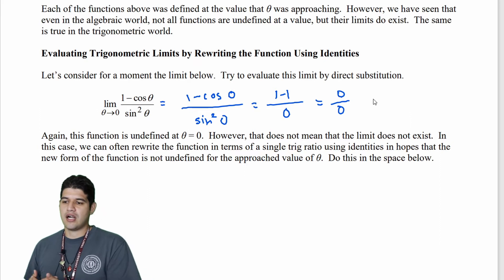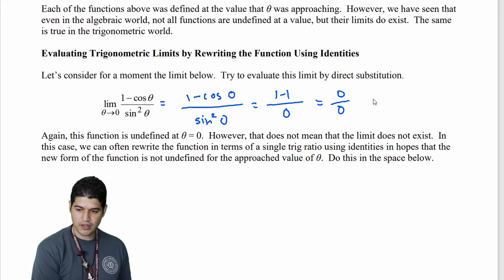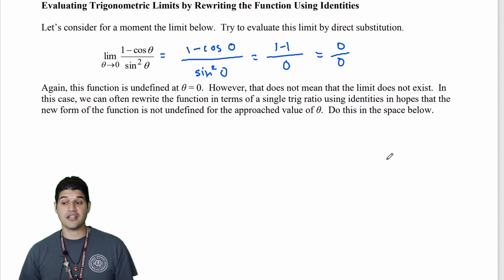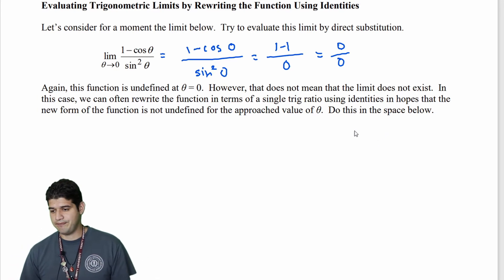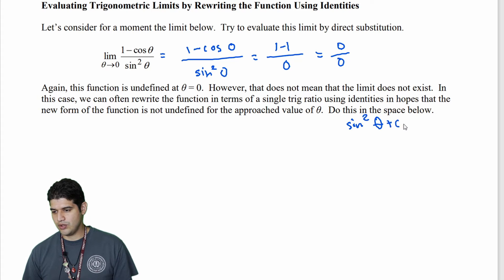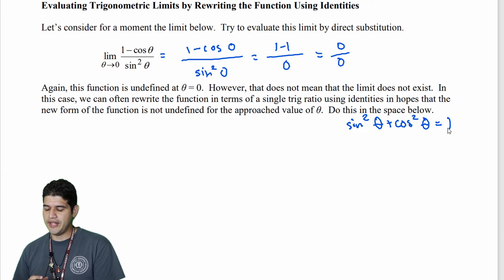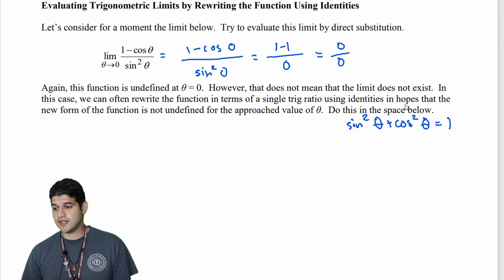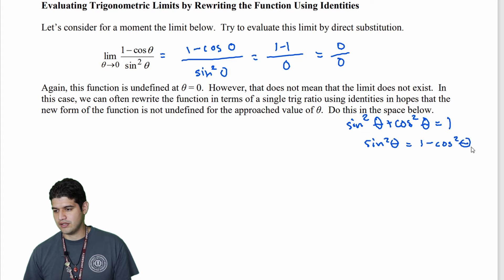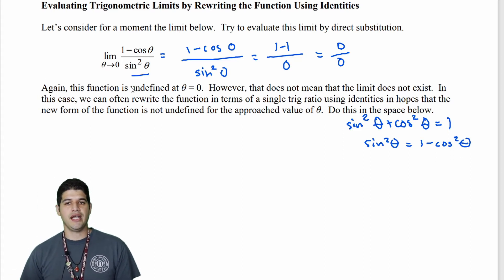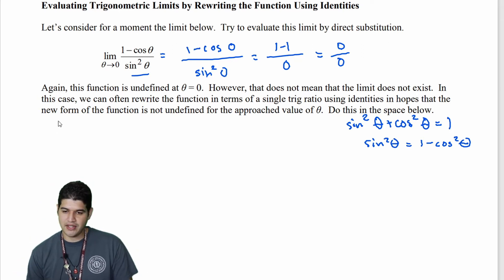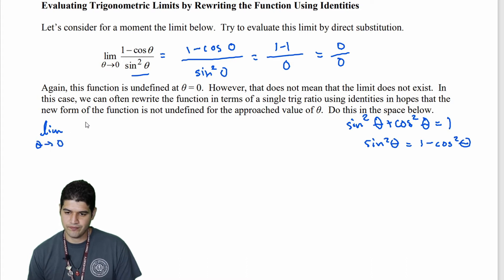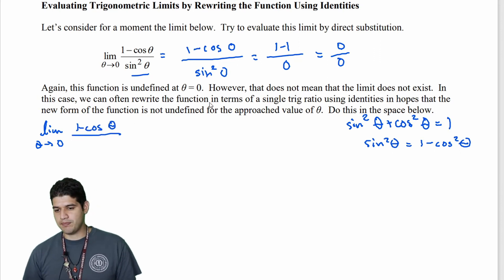Let's try rewriting the function using identities. The Pythagorean identity says sin²θ + cos²θ = 1. Subtracting cos²θ from both sides gives sin²θ = 1 − cos²θ. We can substitute this into the denominator, so now we have the limit as theta approaches 0 of (1 − cos θ) over (1 − cos²θ).